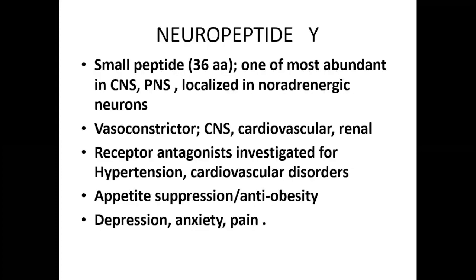The third vasoactive peptide in the vasoconstrictor category is neuropeptide Y. It is a small peptide containing only 36 amino acids, one of the most abundant in the CNS and peripheral nervous system. Localized in noradrenergic neurons, it is a vasoconstrictor in the CNS, cardiovascular, and renal areas. Its receptor antagonists are being investigated to control hypertension, cardiovascular disorders, appetite suppression, anti-obesity, depression, anxiety, and pain.